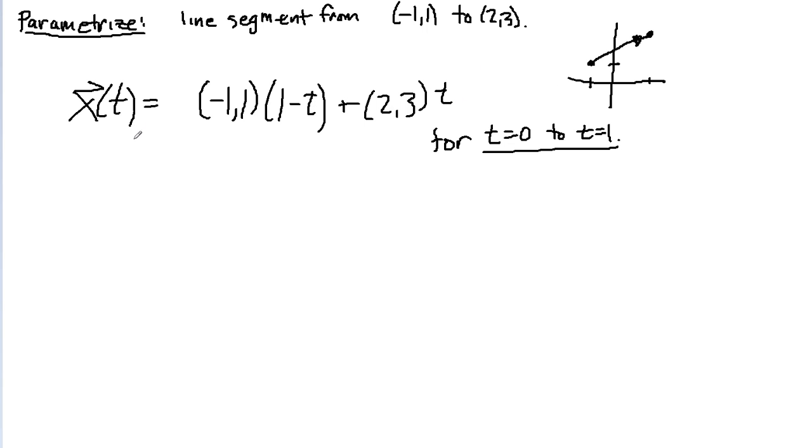And it's a line because they're a bunch of linear things. If you really want to do this out, you could: plus 2t, 3t, and then you could just combine it to be 3t minus 1 comma 2t plus 1.